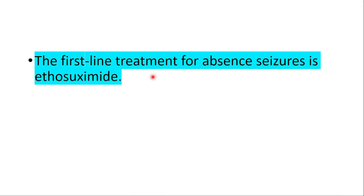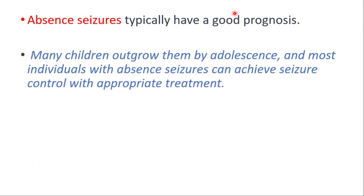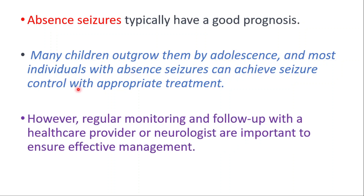The first line treatment is ethosuximide. They usually have a good prognosis — many children outgrow them by adolescence, and most individuals with absence seizures can achieve seizure control with appropriate treatment. However, regular monitoring and follow-up with a healthcare provider or neurologist are important to ensure effective management.